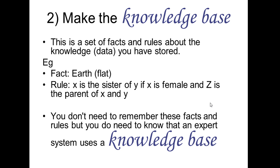Once we've gathered knowledge from the expert, we need to make what is called a knowledge base. A common mistake is to say that we need a database — we don't, we need a knowledge base. A knowledge base is made up of facts and rules. A fact is something which is unconditionally true, and a rule is something which is conditionally true. What you need to be aware of is that you have a knowledge base full of facts and rules about a given topic.